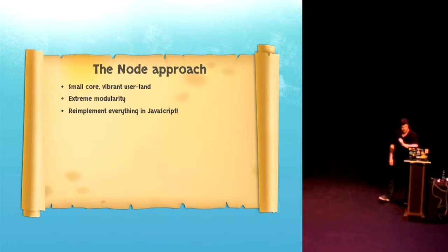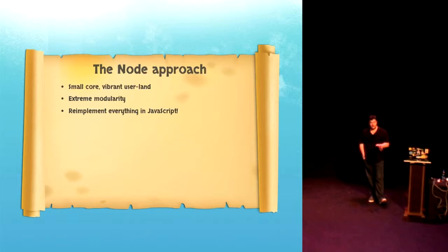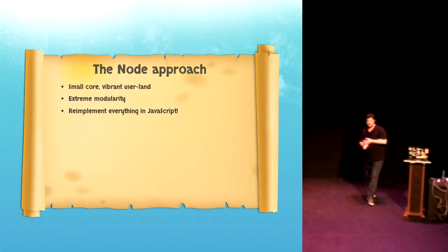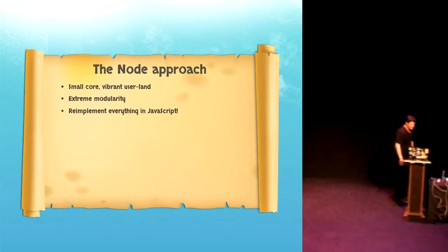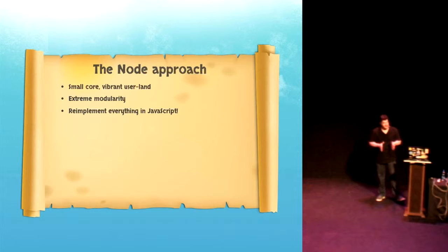So let's talk about Node, because this is a Node conference. So the Node approach. This is the Node approach, I think, in a few dot points. Small core and a vibrant user land. The core of Node is really small. Amongst most platforms, it's one of the smaller ones where you've got the really basic functionality in the core, and the rest of the functionality is in this user land that competes for developer attention, and it's extremely vibrant. Extreme modularity. I think this is one of the defining aspects of Node. It's the extreme modularity.